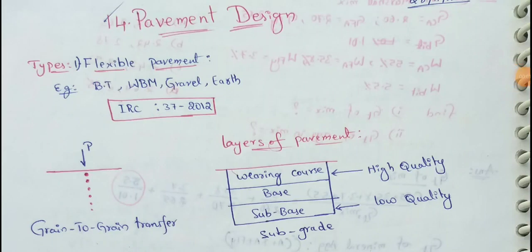Next topic, pavement design. Based on structural behavior, pavements are two categories. First one is flexible pavement. Second one is rigid pavements.